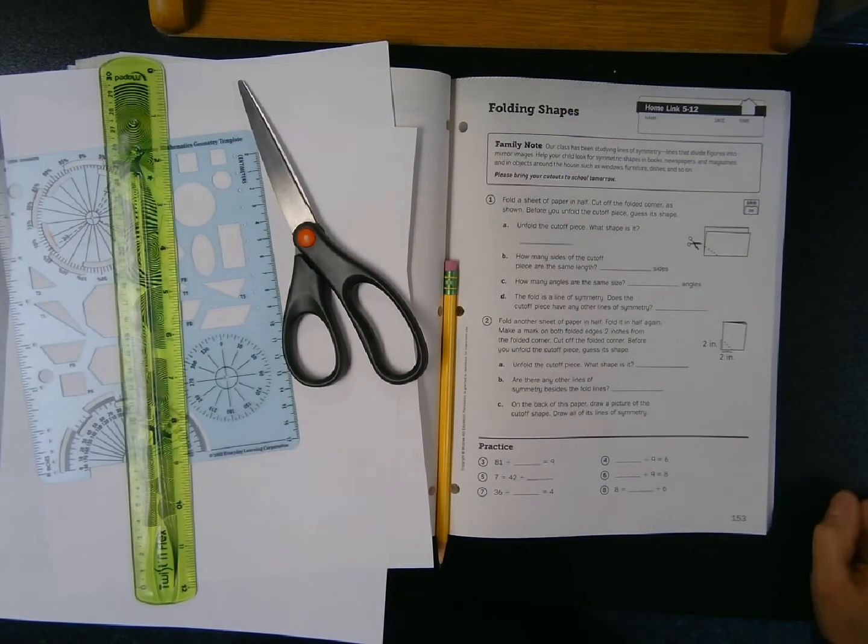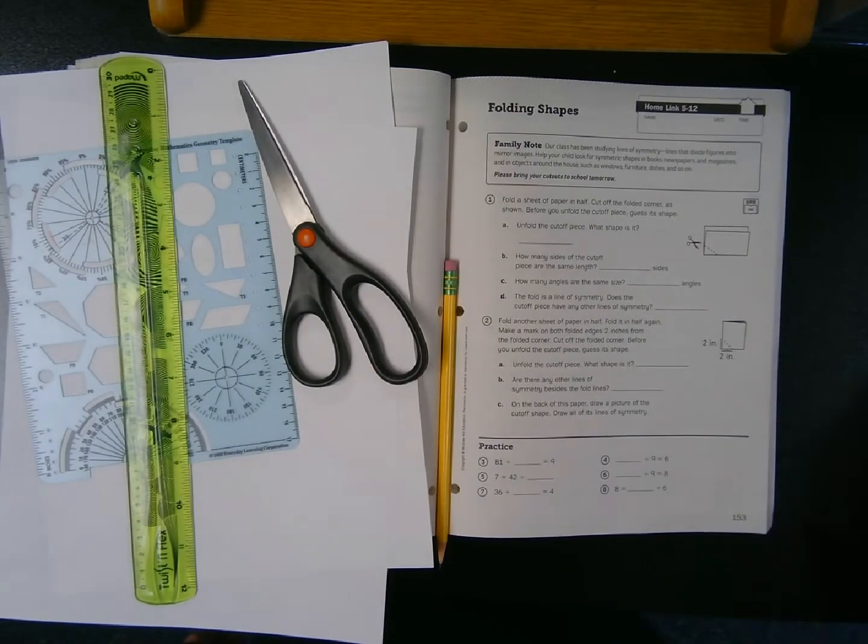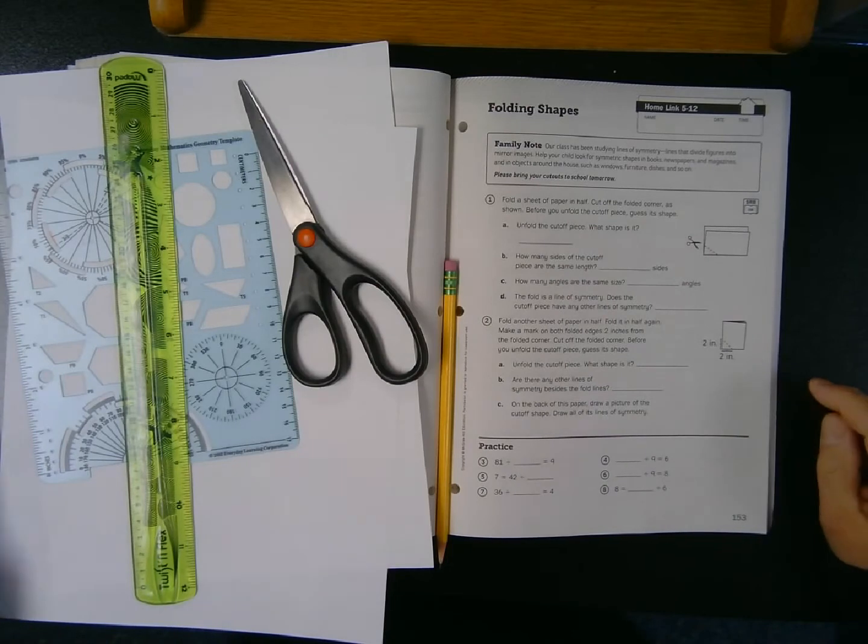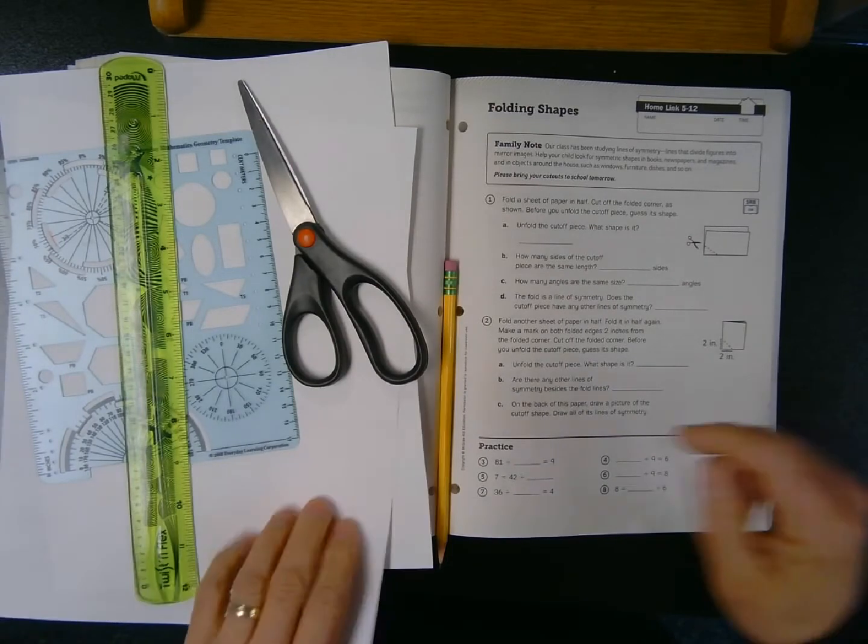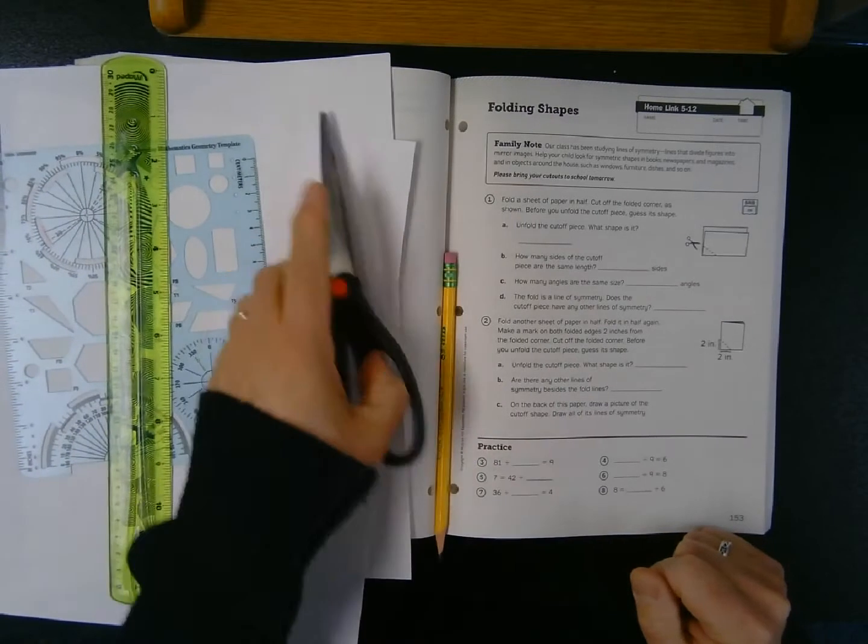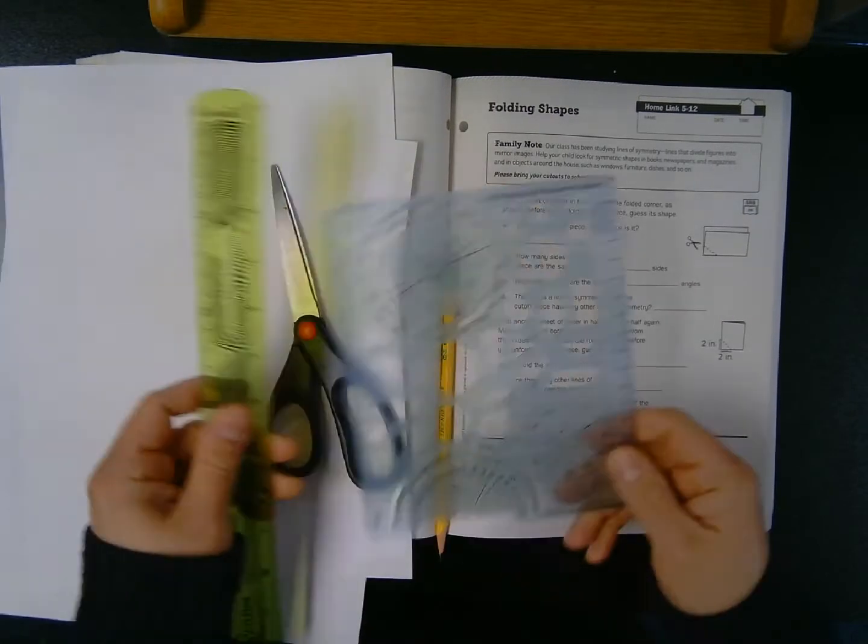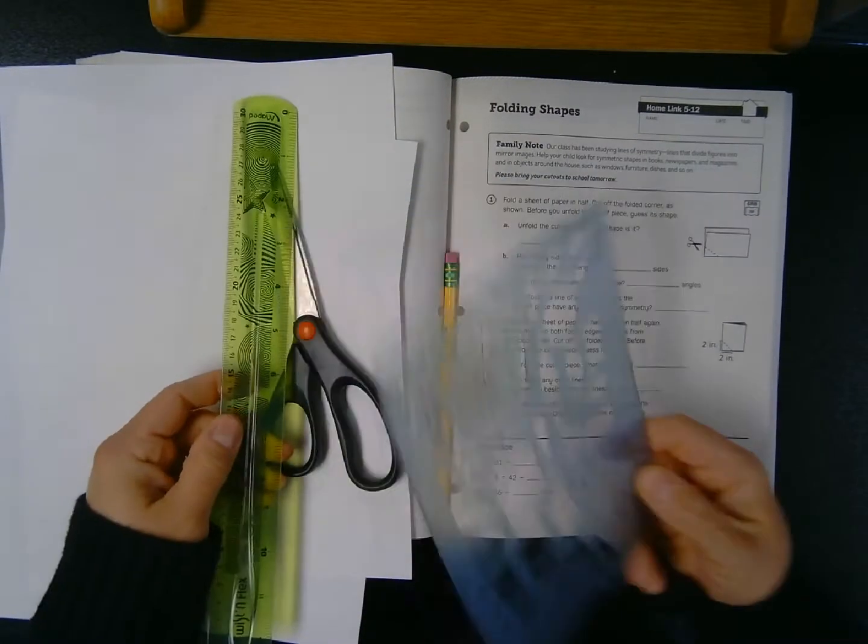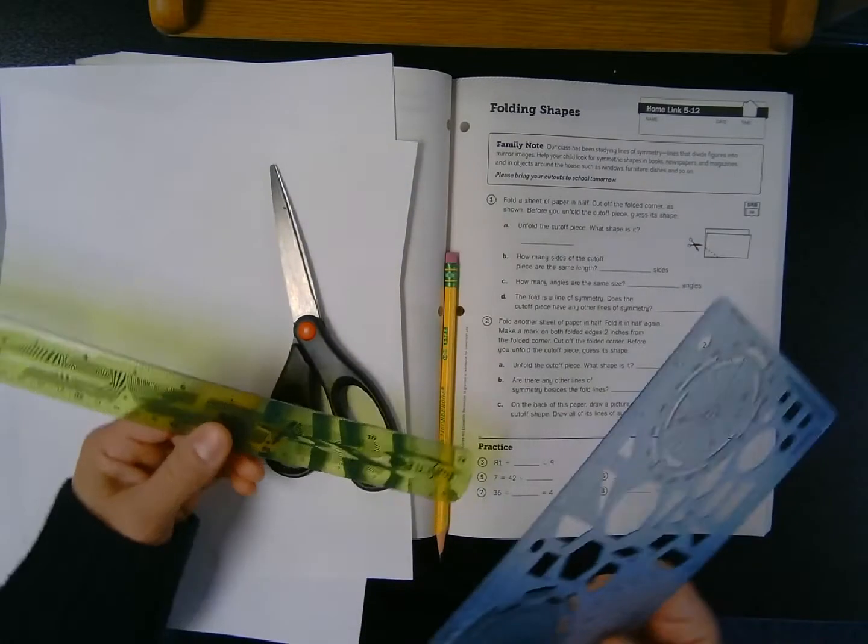Like I said, we are in our Homelinks, Unit 5, Lesson 12, which is found on page 153. As you can see, I've gathered some supplies. I have a pair of sheets of paper, a pencil, a pair of scissors, and I will need use of either my math template or a ruler, something that I can use to measure inches with.